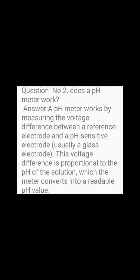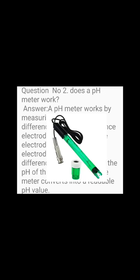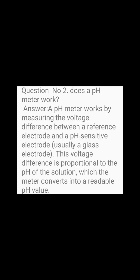Question number 2: How does a pH meter work? Answer: A pH meter works by measuring the voltage difference between a reference electrode and a pH-sensitive electrode, usually a glass electrode. This voltage difference is proportional to the pH of the solution, which the meter converts into a readable pH value.